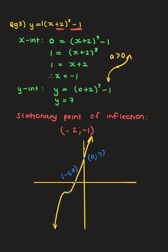Label all coordinates. Remember that this one stationary point is also the point of inflection — that's why we call it the stationary point of inflection. Interesting looking graph!